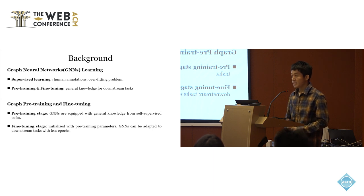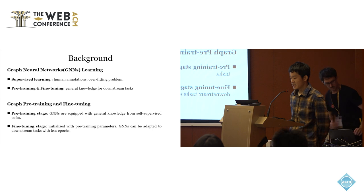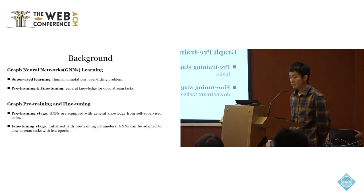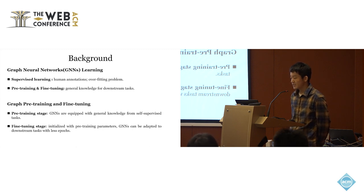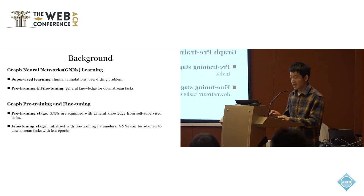This paradigm contains two stages. The first stage is a pre-training stage, where many self-supervised tasks are designed to equip the graph neural networks with general knowledge. And then, in the fine-tuning stage, initialized with pre-training parameters, the graph neural networks can be adapted to the downstream tasks with less training epochs.